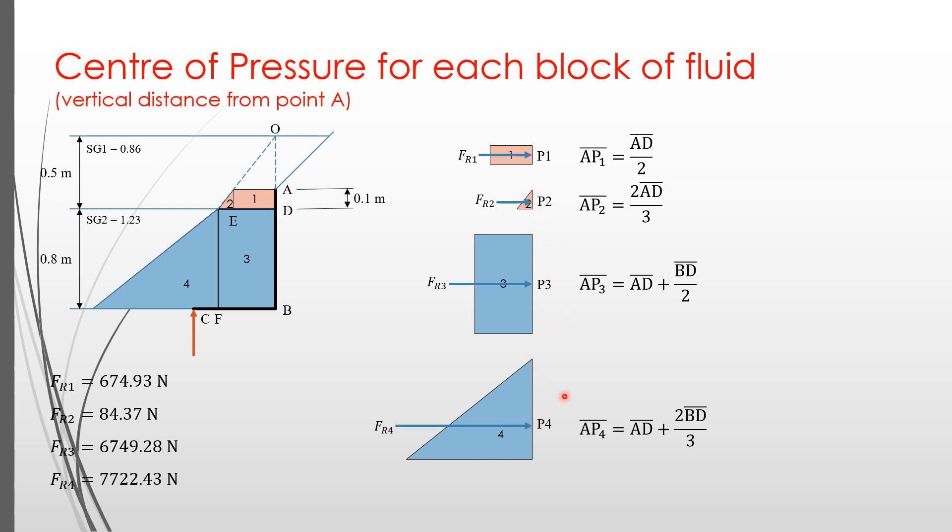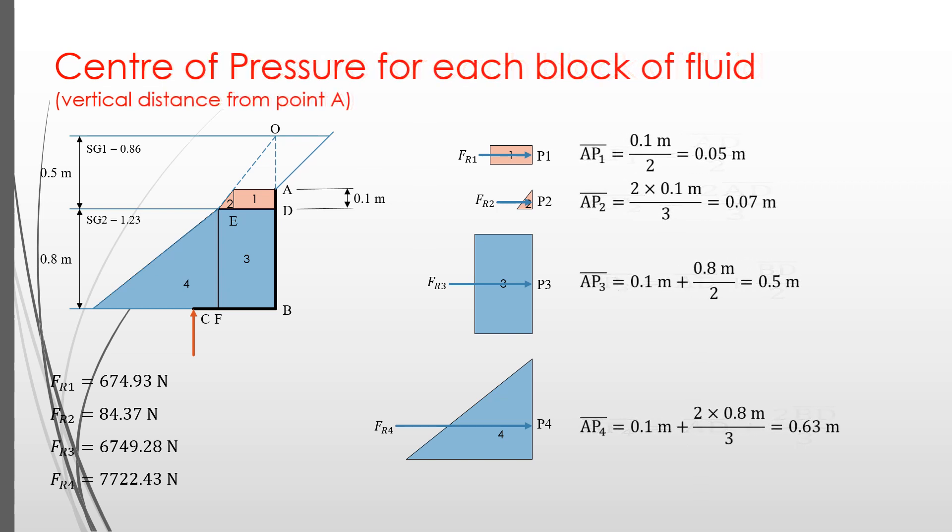Hence, we can calculate the location of the center of pressure for each shape as written here. We measure the distance of each center of pressure to point A, because later we are going to calculate moments about point A. We obtain the distance from A to P1 equals 0.05 meters, the distance from A to P2 is 0.07 meters, the distance from A to P3 equals half a meter, and the distance from A to P4 equals 0.63 meters.